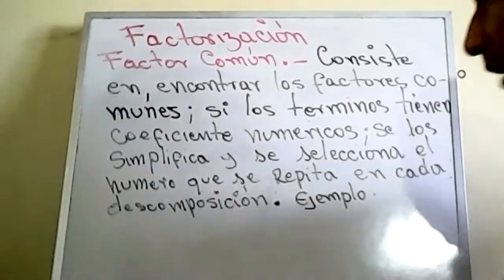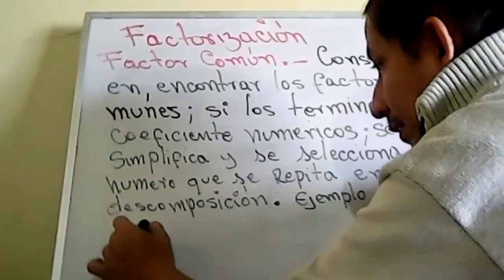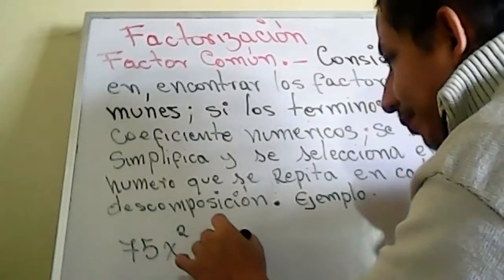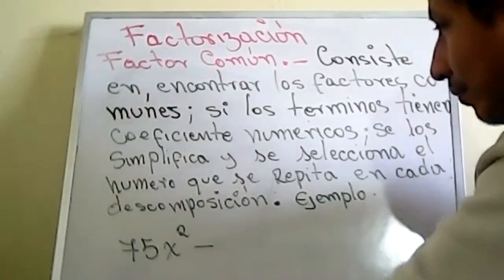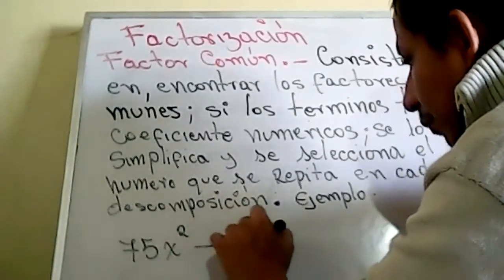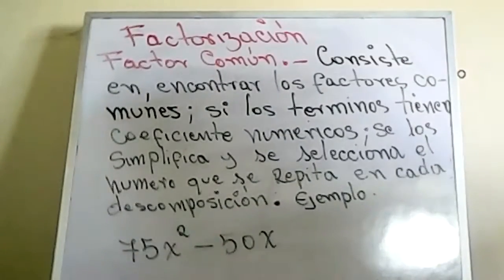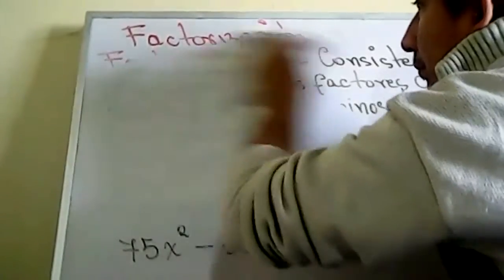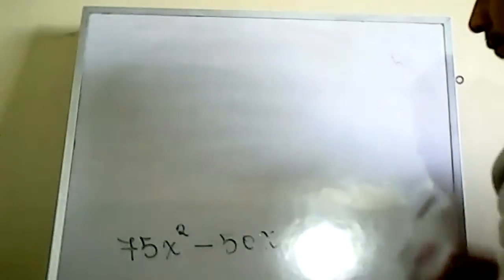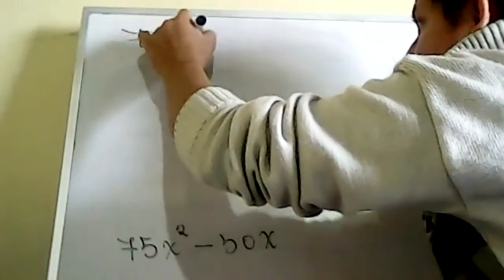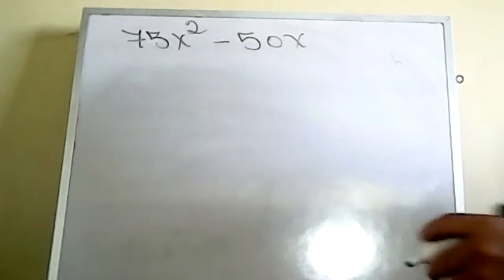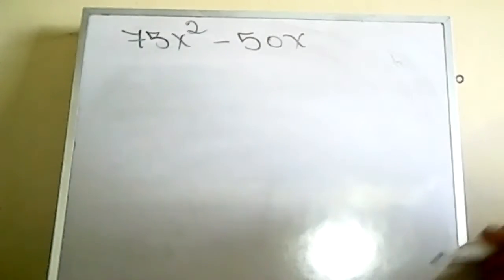Vamos a trabajar primero con los coeficientes numéricos. Hagamos de cuenta que yo les propongo: 75x² - 50x. Solamente vamos a trabajar con los coeficientes numéricos. Vamos a coger cada coeficiente numérico y lo vamos a simplificar.